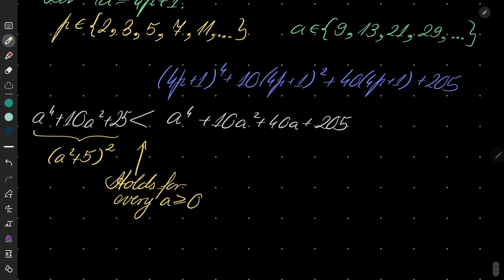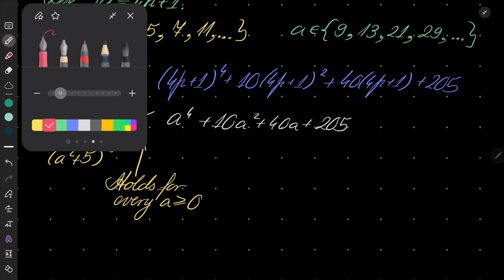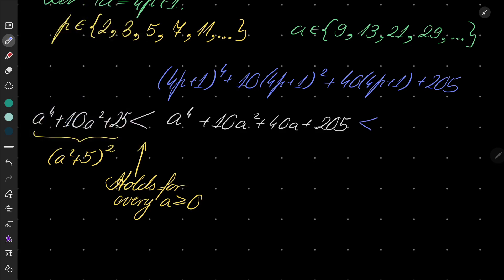And the idea is to try to say when the following is true. Because here we have some number squared and the next square will be a squared plus 6 squared. And the idea is to find when is it true.